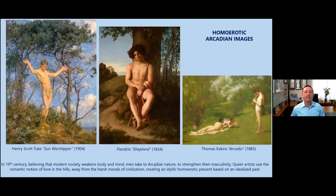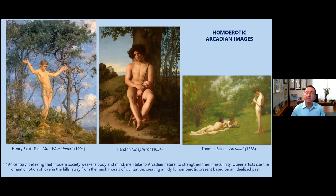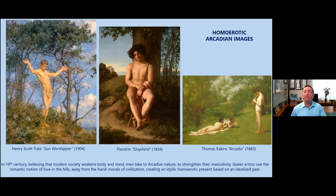In the 19th century, the belief was that modern society weakened body and mind, so men took to the Arcadian idea of nature to strengthen their masculinity. Queer artists took advantage of this and used this romantic notion of love in the hills, away from the harsh morals of civilization, creating an idyllic homoerotic present based on an idealized past. These are three examples — one by Scott Hube, one by Flandrin, and one by Thomas Eakins.